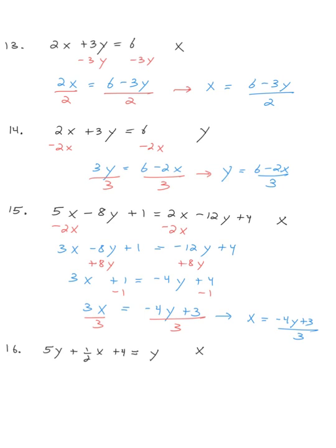I'm now solving for x and noticing it has a one-half next to it. So why not double every single term so this becomes a 1? Doubling everything: 10y plus x plus 8 equals 2y. Subtracting 10y and subtracting 8 from both sides, I have x by itself: 2 minus 10y, so that's negative 8y. The 8 does not connect with anything, so there's my answer: x equals negative 8y minus 8.